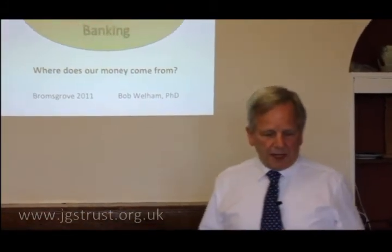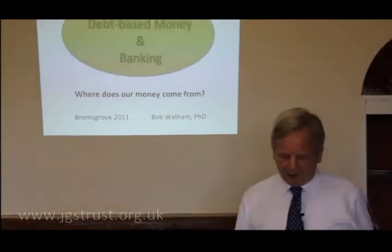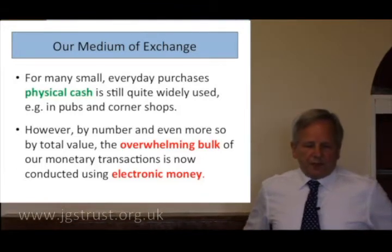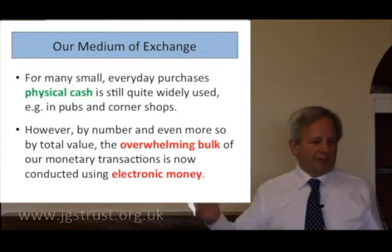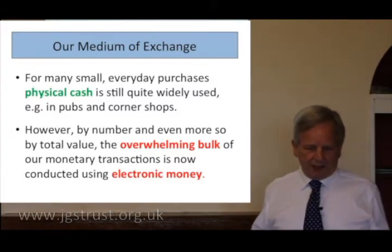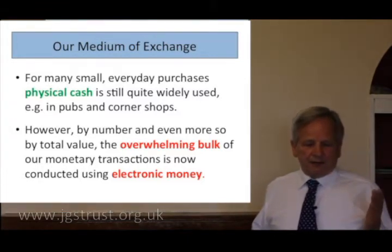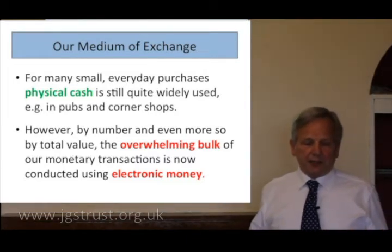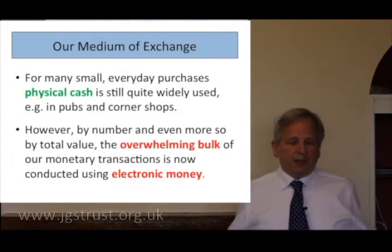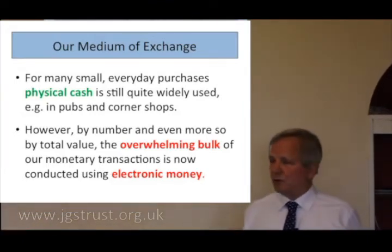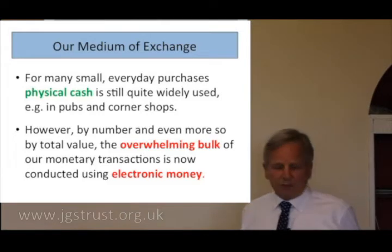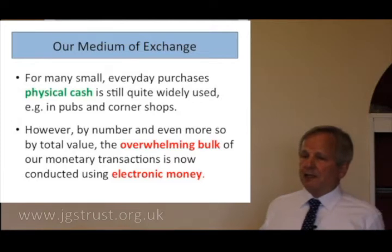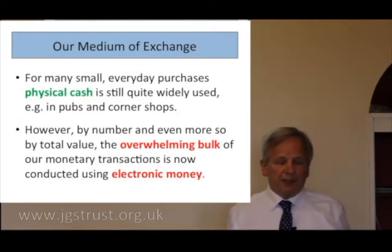So where does our money come from? That's a good question to start with. Our money is, for all intents and purposes, our medium of exchange. We buy and sell stuff, we earn it, save it, lend it and so on. And it comes in two forms as far as we the users are concerned: physical cash — stuff in your pocket, your wallet — still quite widely used for pubs, corner shops, small everyday purchases. However, the business, the economy, is conducted using electronic computer money.